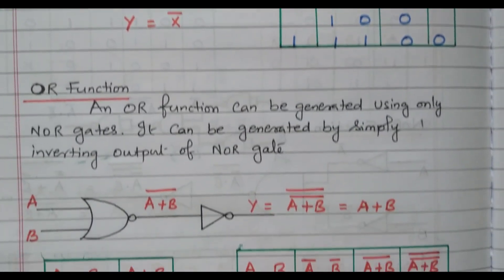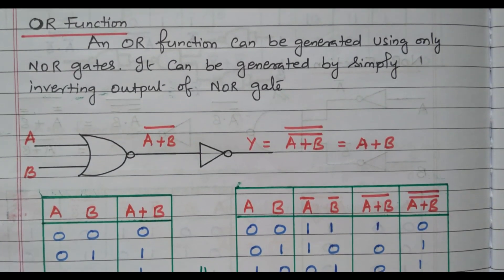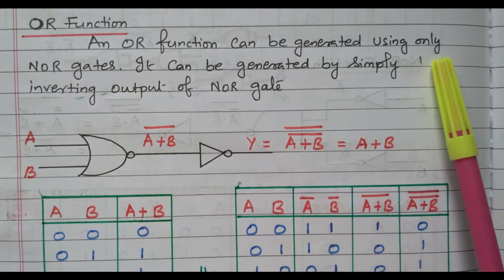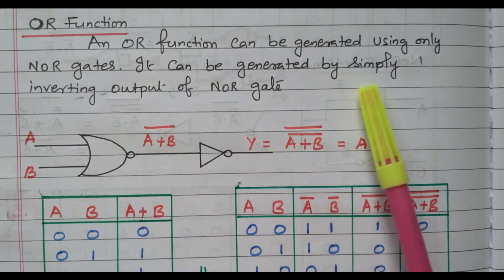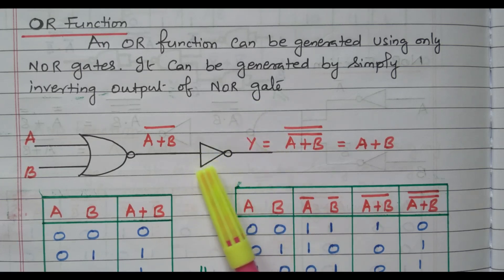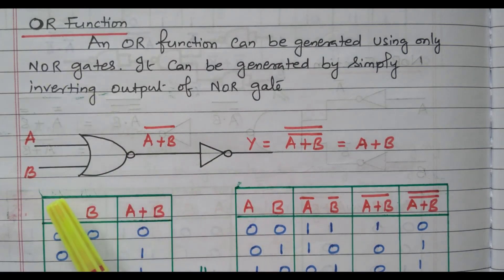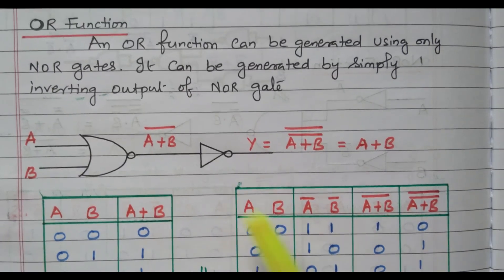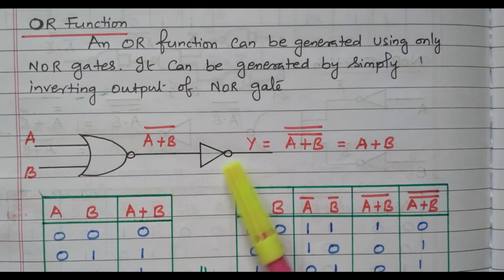Now we will go to the OR function — how to perform the OR function using the NOR gate. An OR function can be generated using only NOR gates. It can be generated by simply inverting the output of the NOR gate. At the output, we can connect one NOR gate. By connecting one NOR gate at the output, we can get the OR operation.